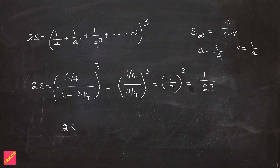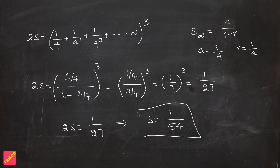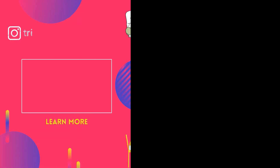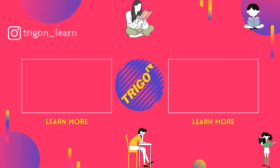We got 2S = 1/27, which gives S = 1/54. That is the final answer. We just needed to make basic modifications to the summation — applying cyclic changes and pairwise interchanges — to arrive at the required answer.